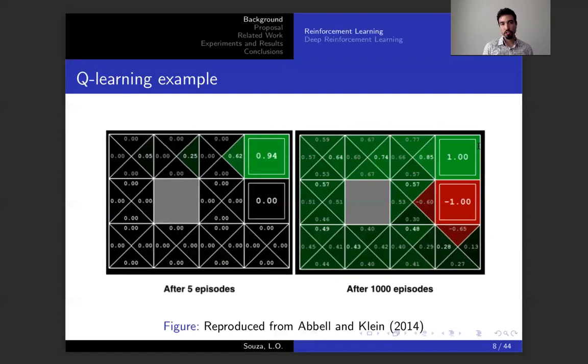This shows Q-learning in the tabular format. Each square here is a state. The state is divided between four actions going up, down, left, or right. And it shows the Q table, the Q function, which represents the table as it's updated after five episodes and as it's updated after a thousand episodes. After a thousand episodes, you can simply follow the maximum Q value for each state action pair in order to reach the reward of one.